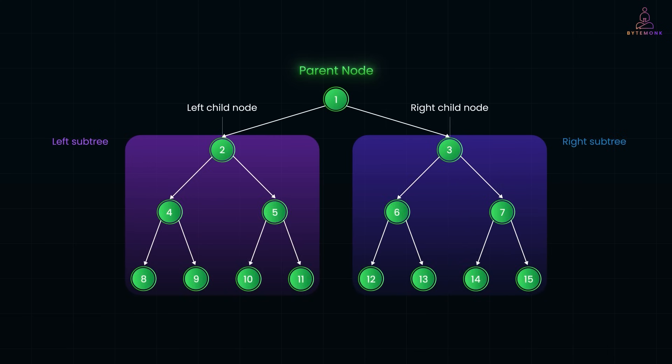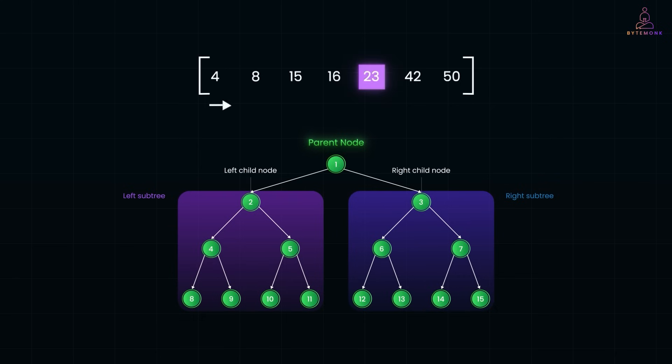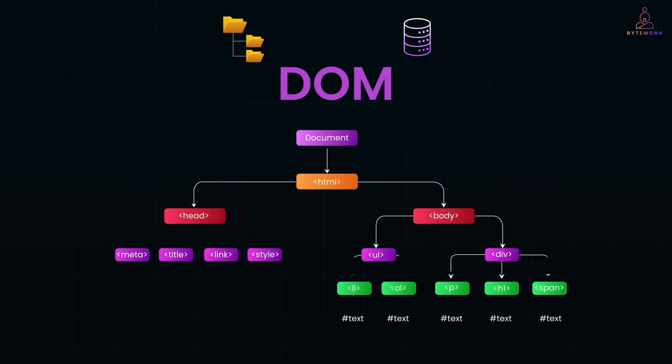Trees are one of the most fundamental data structures in computer science, and also one of the most powerful. Unlike arrays or linked lists that move in one direction, trees branch out. They are non-linear, which means they let us organize data in a hierarchy, like a file system, a database index, or even the DOM in a web browser.